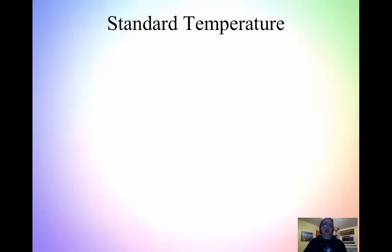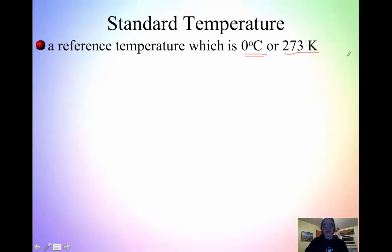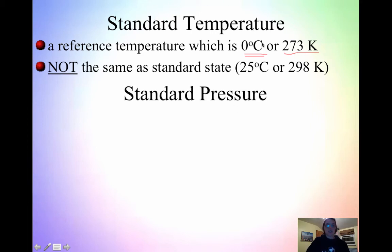Now that we've talked about pressure, to get into gas laws and the relationships between variables, we're going to look at standard temperature. Standard temperature is a reference temperature: zero degrees Celsius or 273 Kelvin. When we look at gas laws, we use Kelvin and not Celsius — because Kelvin has no negative numbers, and at zero Kelvin all movement stops. We use Kelvin in all gas law problems. Standard temperature — STP, standard temperature and pressure — is zero degrees Celsius; this is NOT the same as standard state, which is 25 degrees Celsius.